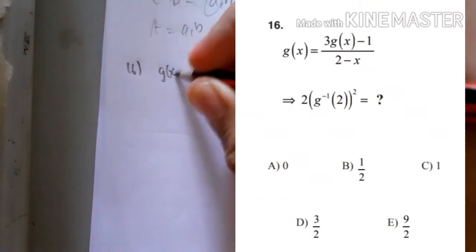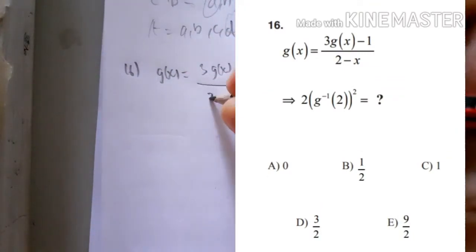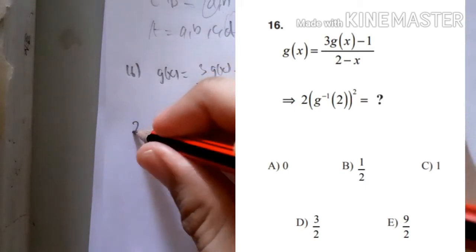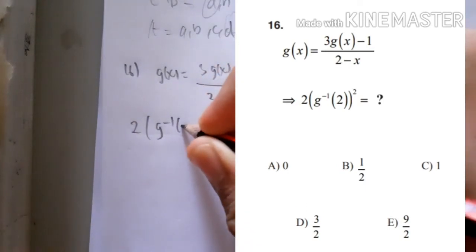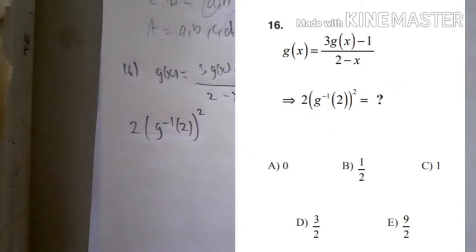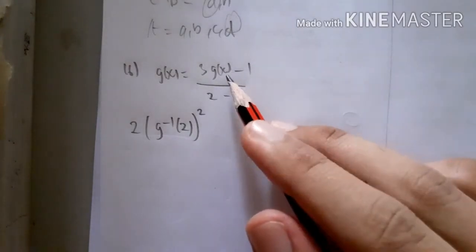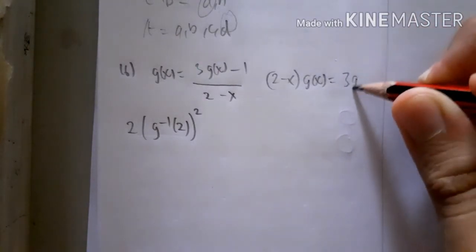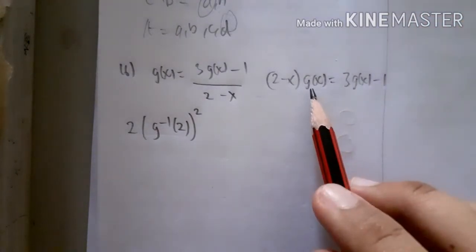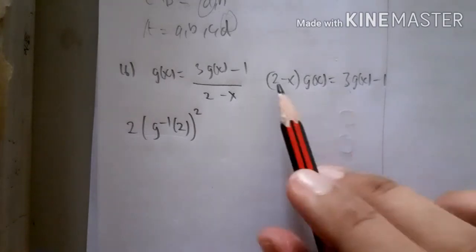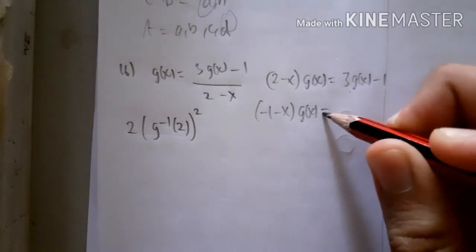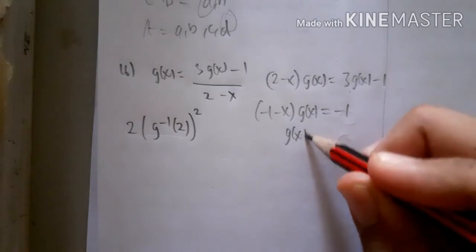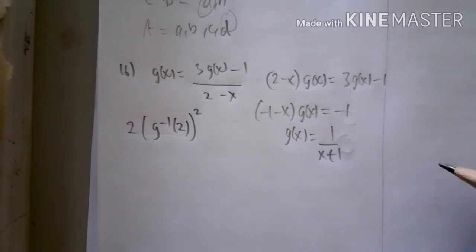For number 16, g(x) = (3g(x) - 1) / (2 - x), and they ask about 2 times the inverse of g(2) squared. To find g(x), we rearrange: (2 - x)·g(x) = 3g(x) - 1, which gives (-1 - x)·g(x) = -1, so g(x) = 1/(x + 1).